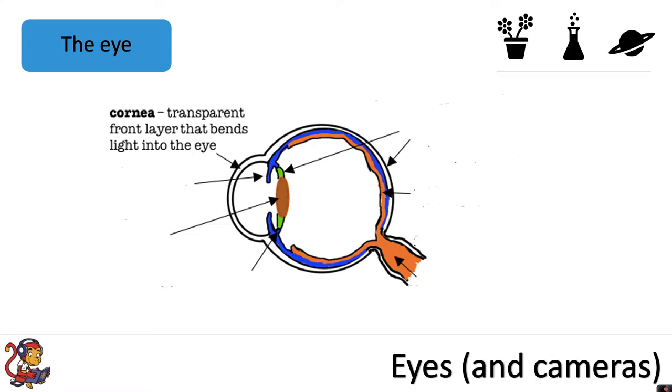First of all you've got the cornea which is transparent so it transmits light and it's the front layer that bends light into the eye.